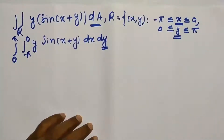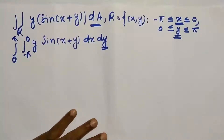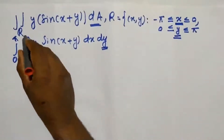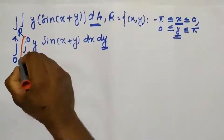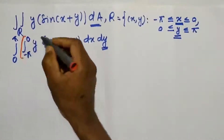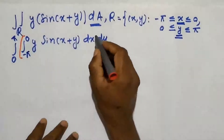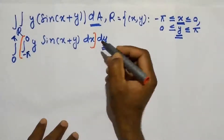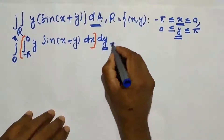For solving multiple integrals, we start with the innermost integral. Here, the innermost integral is the integral from minus pi to 0 of y·sin(x+y) dx. Since we have dx, we first integrate with respect to x.